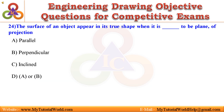Question 24. The surface of an object appears in its true shape when it is parallel to the plane of projection. A. Parallel, B. Perpendicular, C. Inclined, D. None. Answer is Parallel.